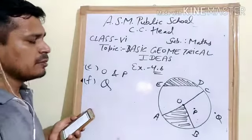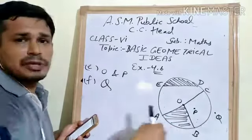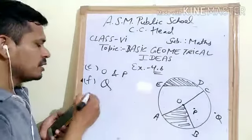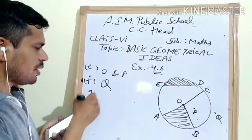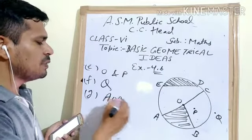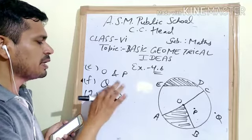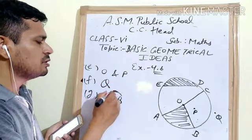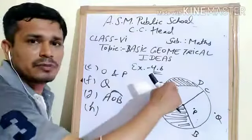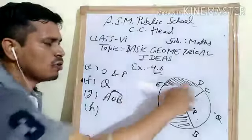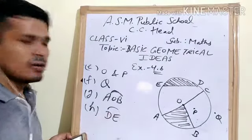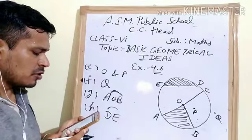A sector is formed by two radii and one arc portion. So sector AOB — here, the region AOB is what is called the sector. An arc is part of your sector. And lastly, a segment: the segment is the region between a chord and the arc — so the segment here is DE with its arc. So this is your exercise 4.6.